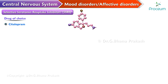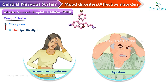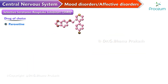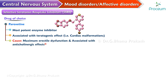Citalopram is used specifically in premenstrual syndrome and agitation. Paroxetine is the most potent enzyme inhibitor and is also associated with teratogenic effects like cardiac malformations. It causes maximum erectile dysfunction and is associated with anticholinergic effects as well.